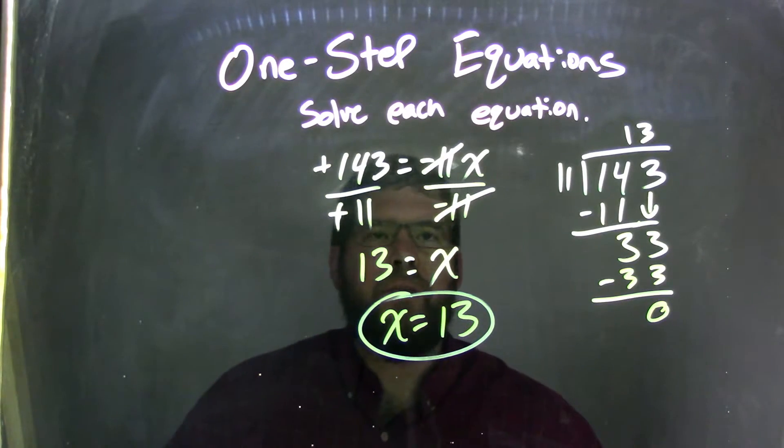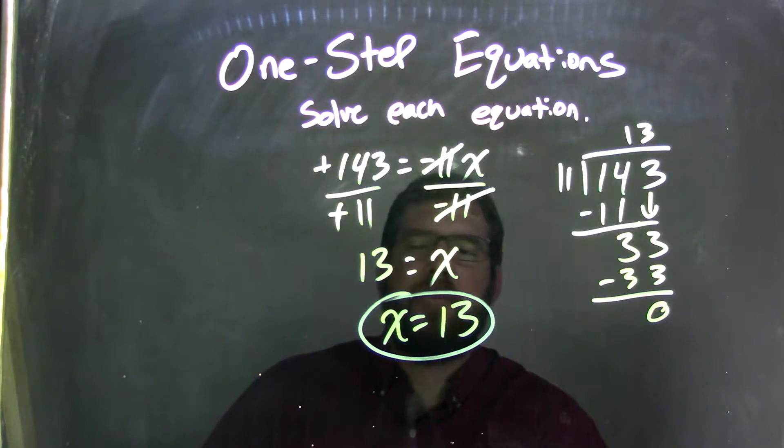So let's recap. We start with negative 143 equals negative 11x. I divided both sides by negative 11 because that's the opposite of multiplication.